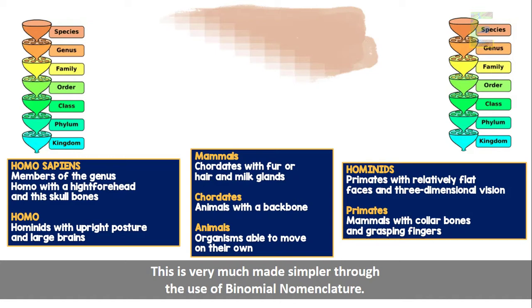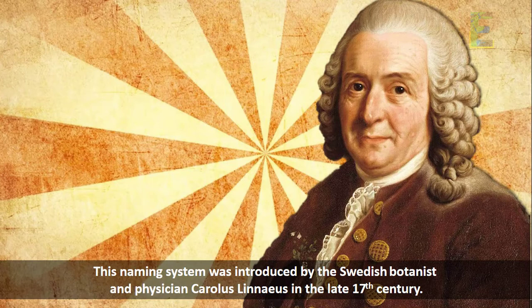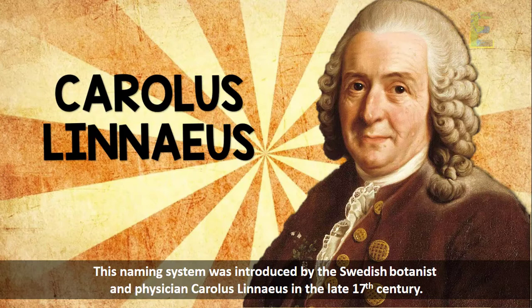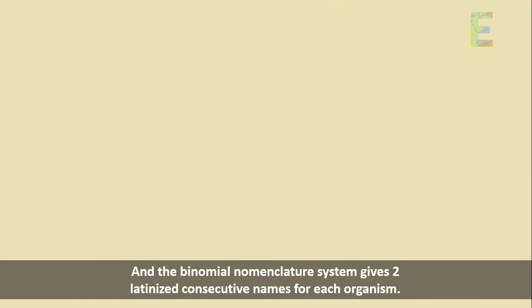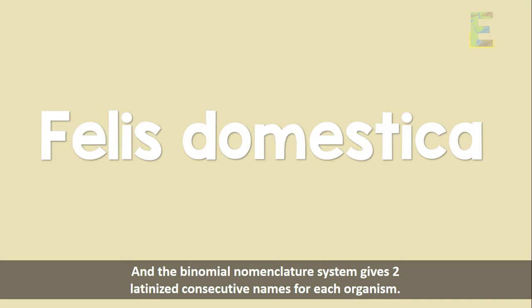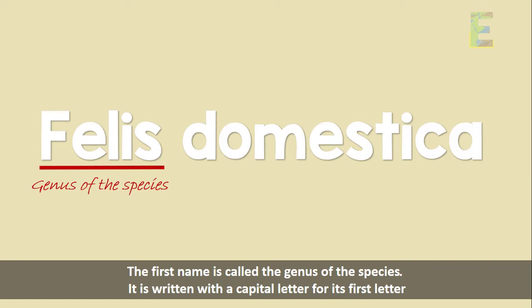This is made simpler through the use of binomial nomenclature. By definition, binomial nomenclature is the formal or standard naming system used by scientists to identify, classify, and name species. This naming system was introduced by the Swedish botanist and physician Carolus Linnaeus in the late 17th century. From the word binomial, it comes from the Latin word binomen, which means two names. The binomial nomenclature system gives two Latinized consecutive names for each organism, and this two-part Latinized name is what we refer to as the scientific name of the organism.